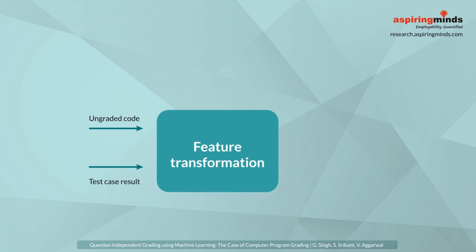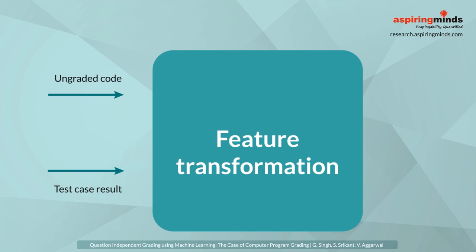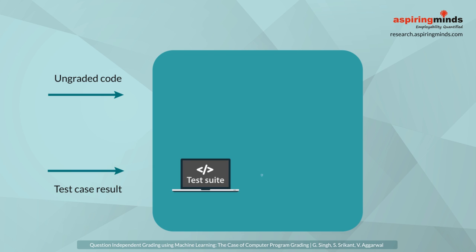How do we create question-independent features? We exploit the ability to automatically identify a subset of codes that solve the question correctly for an unseen set. This is the set of codes which pass all test cases. The good set.